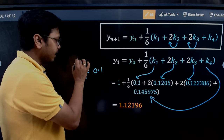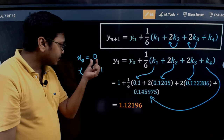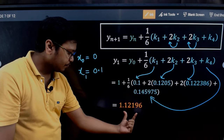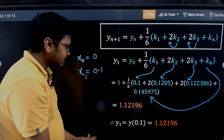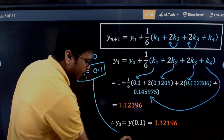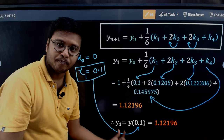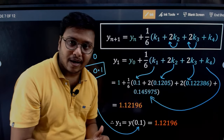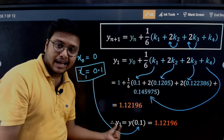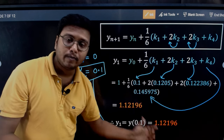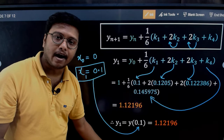Remember, this is not our final answer. We obtained this value of y corresponding to x = 0.1, i.e., y(0.1) = y1. We still need to increment x by h again to reach x = 0.2 and find y2, which will be our final answer.